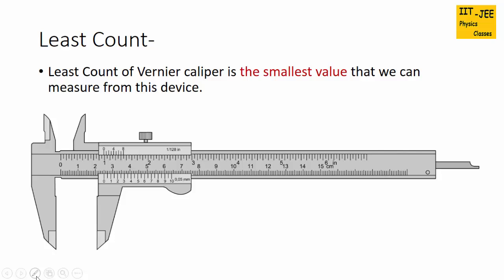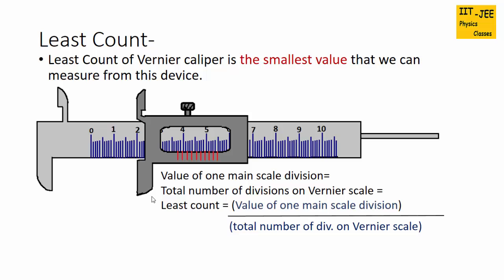Next is Least count. Least count of vernier caliper is the smallest value that we can measure from this device. Least count is marked in some vernier calipers. Here in this vernier caliper, 0.05 mm is the least count. But if least count is not given on the vernier caliper, then we need to calculate it using the least count formula.